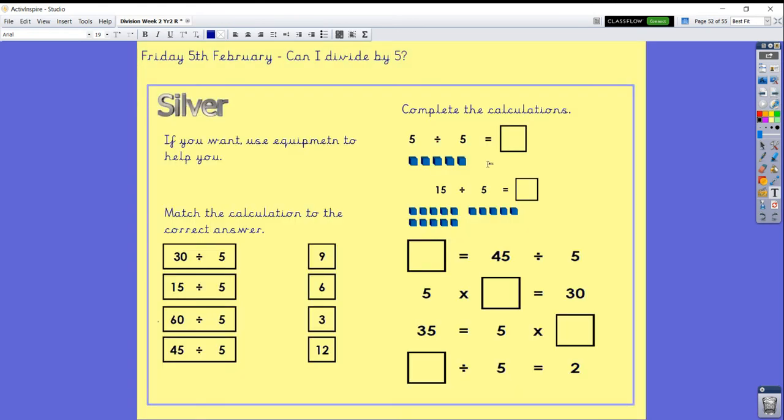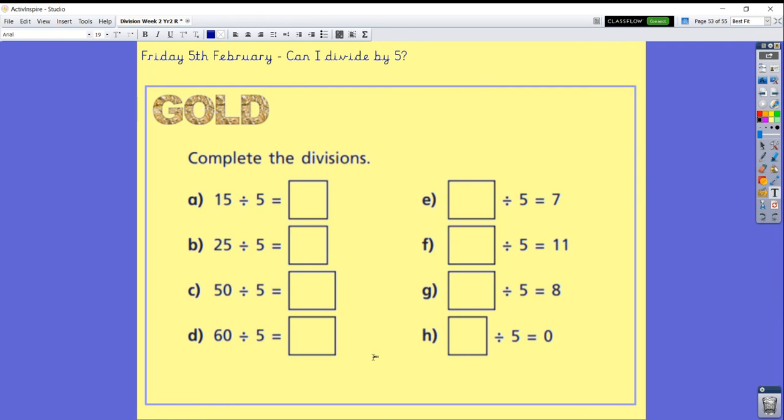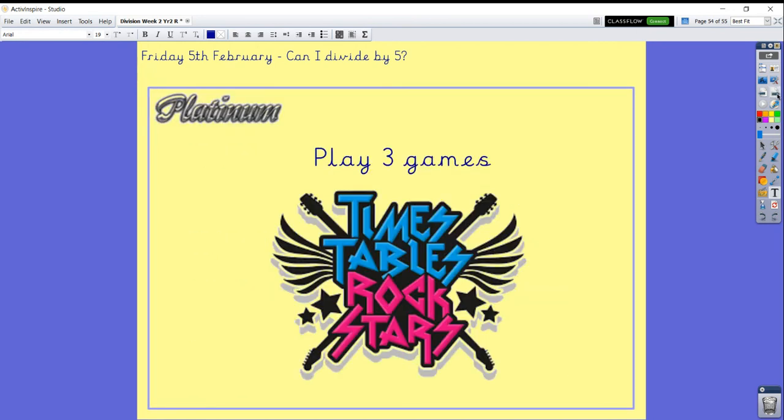Okay, so here is our learning for today. Now if you want to use equipment, please go and get something to help you. See if you can use your matching to help you. Which calculations go with which answers? And then we've got a few calculations here to do. Some of them have got pictures and these ones haven't. If you want to draw pictures, you can. Now for the challenge. Just practicing some divisions. Can you do them in your head? How fast can you do them? And finally, we have got playing times table rock stars. Looking forward to seeing your learning online. Have a great day.